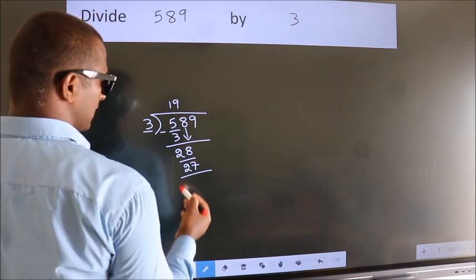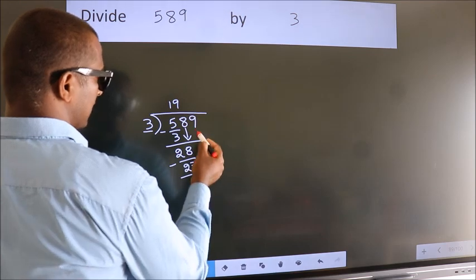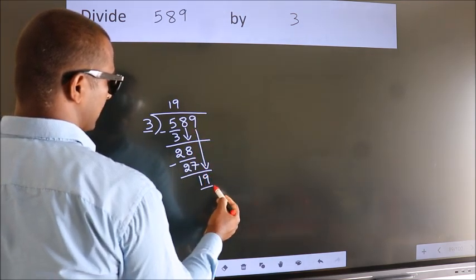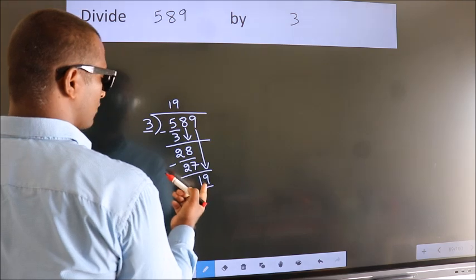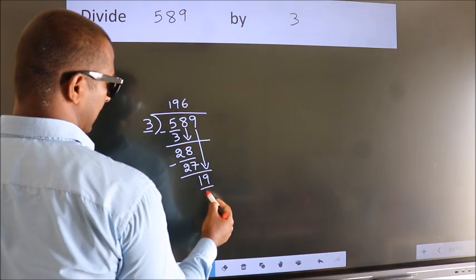Now, we subtract. We get 1. After this, bring down the beside number. So, 9 down. So, 19. A number close to 19 in 3 table is 3 sixes 18.